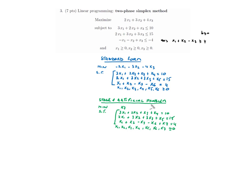In stage one we solve an artificial problem, whose goal is to find a basic feasible solution to start from for the main problem. Since we already have basic variables in the first and second equations, we only add an artificial variable x7 in the third equation. Only use as many artificial variables as necessary.